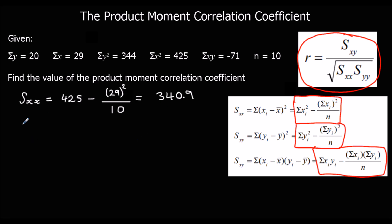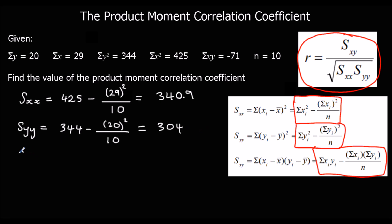Now Syy is the sum of the y squareds, which is 344, minus the sum of the y's squared — so 20 squared — over n, which is 10. That gives us 304. And Sxy is the sum of the xy's, which is negative 71, minus the sum of x times the sum of y — 29 times 20 — over n, which is 10. That gives us negative 129.